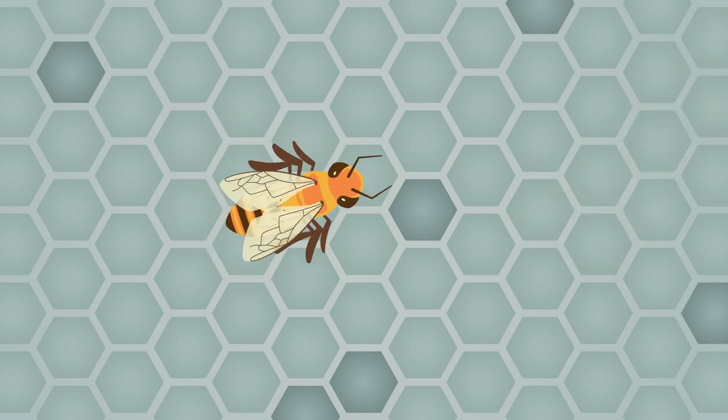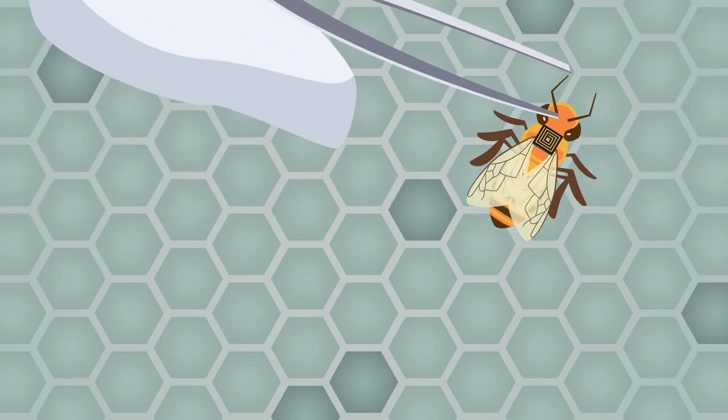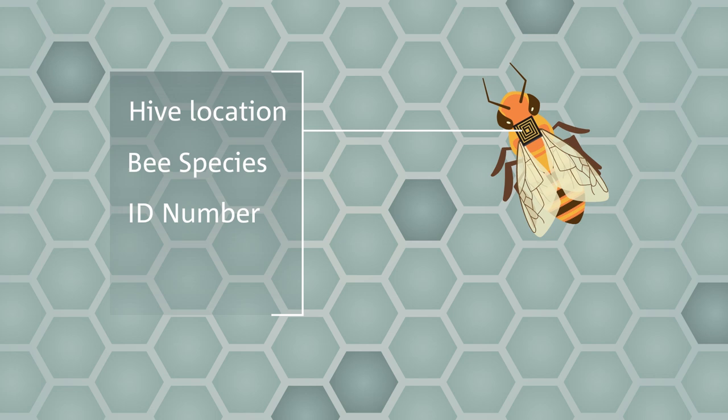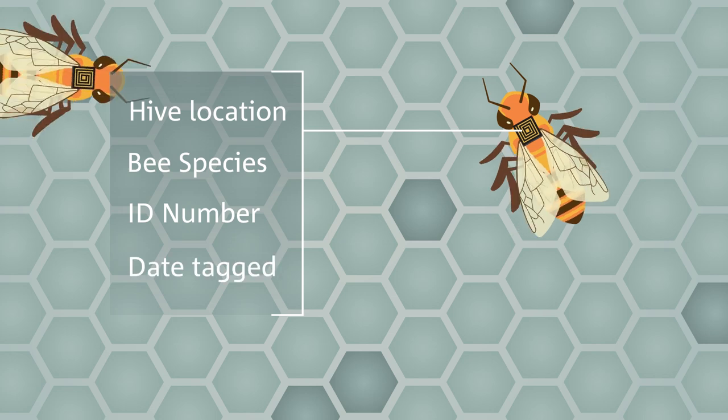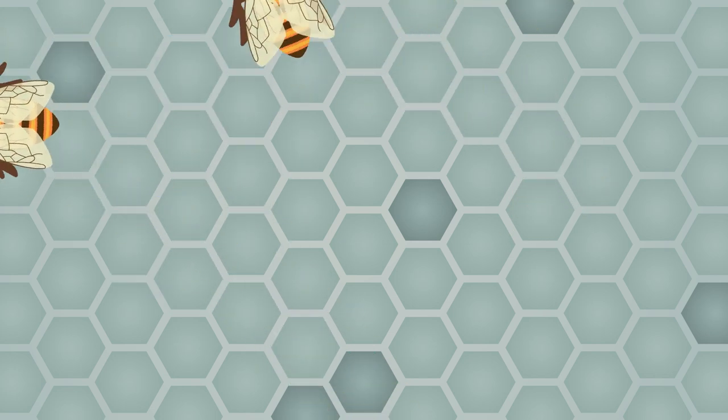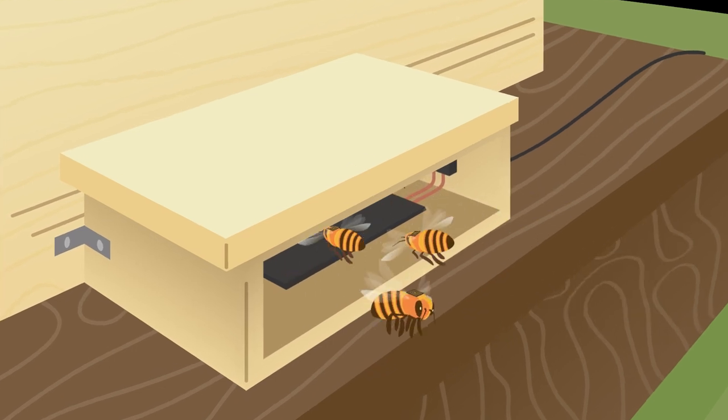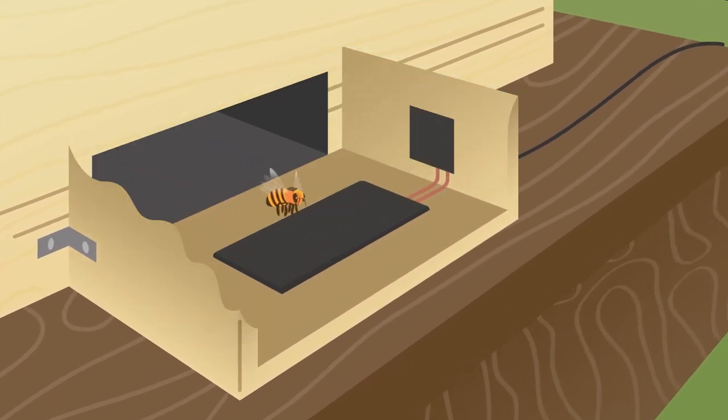the CSIRO has developed micro-sensing technology which allows scientists to monitor the behaviour of individual bees using RFID tags. Electronic readers attached to hives record the behaviour of bees. The data is sent to a mini-computer which processes it and uploads it to the cloud for analysis by scientists located anywhere in the world.